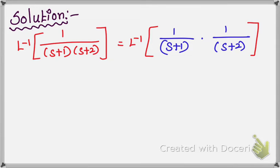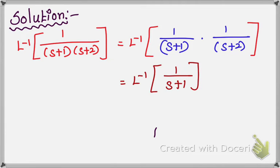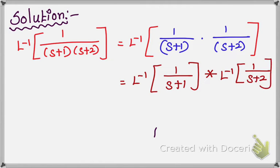That is equal to L inverse of 1 over (s+1) star — where star means convolution — L inverse of 1 over (s+2). Using the operation of star, or using the convolution theorem, we are going to find the value.